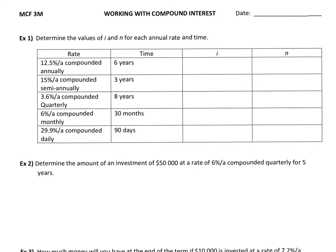The first example is 12.5% per year compounding annually, which means once per year. So our I value is just 12.5% in decimal form, which is 0.125. My N, it's compounding every year for six years, so N equals six. It's going to compound six times in total.